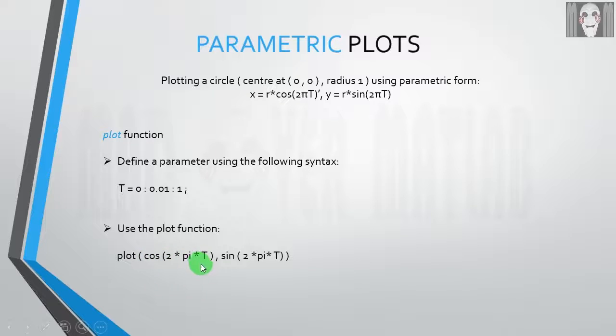So when you write cos(2πt), this is actually a vector which has values starting from cos(2π*0) till cos(2π*1). The values in between are cos(2π*0.01), then cos(2π*0.02), and so on. Similar is the case for the y coordinate.